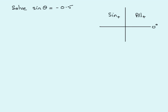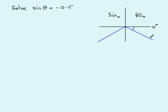What we always do in questions like this is mark two lines: one in the fourth quadrant and one in the third quadrant where sine is negative. We mark each line at an angle to the horizontal line, and make sure both lines are equally inclined to the horizontal — so these two angles should be the same size.